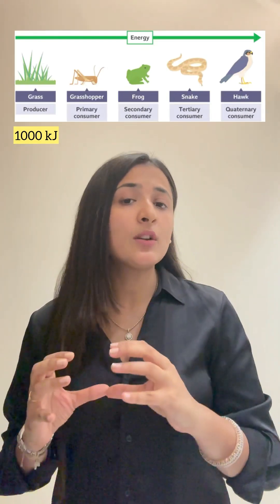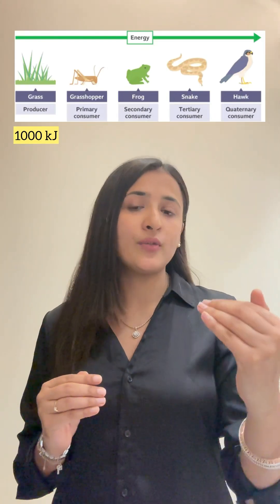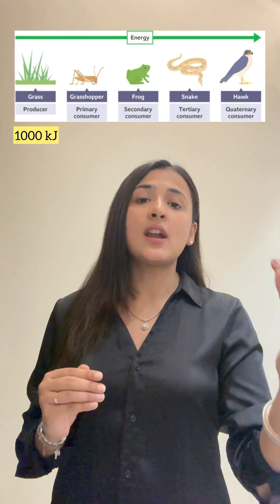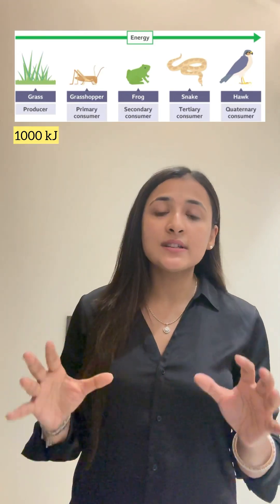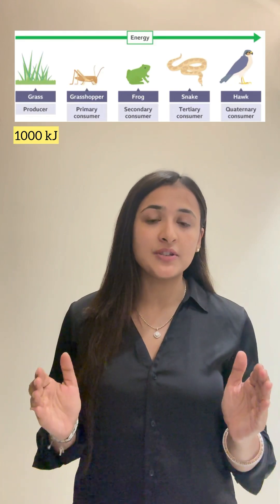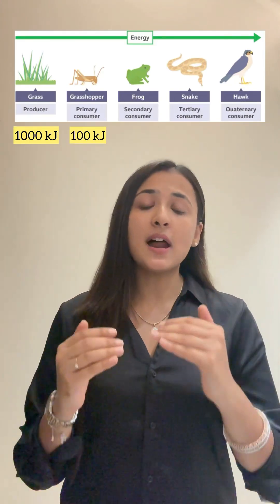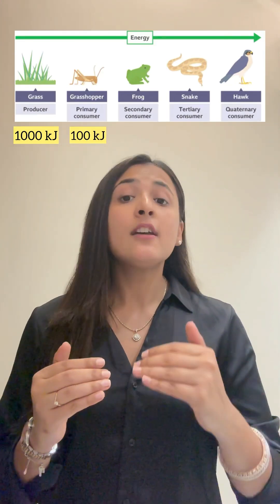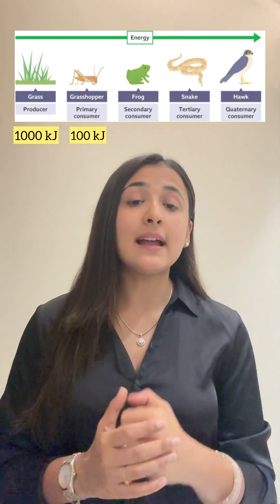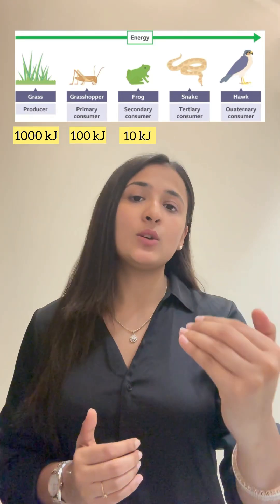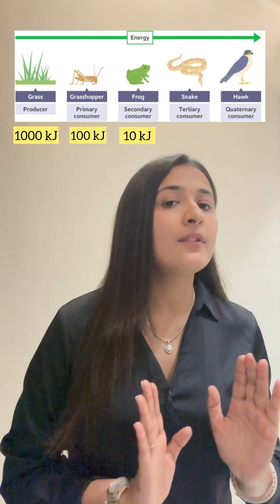So 1000 kJ of energy — only 10% will be transferred to the next trophic level, that is at the level of the grasshopper. So the grasshopper gets 100 kJ of energy. Now, the frog gets 10% of the grasshopper's energy, that is 10 kJ of energy. The rest of the energy is lost in the form of heat.